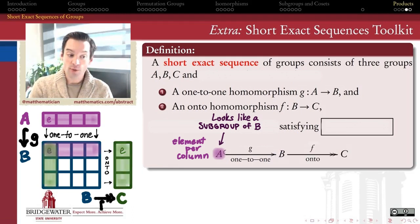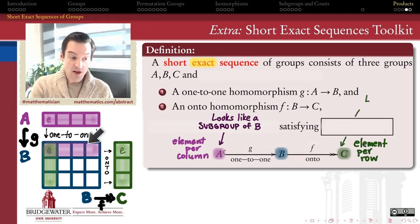And we want that homomorphism to be onto, because we want each of the elements in my group C to be accounted for by one of these purported cosets.